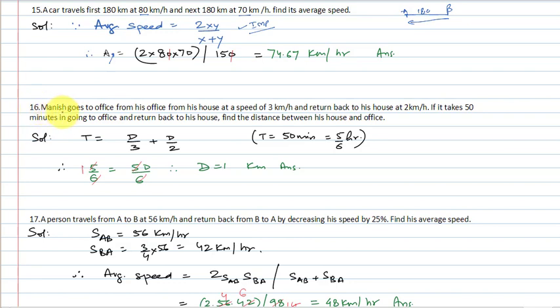Question number 16: Manish goes to his office from his house at a speed of 3 km per hour and returns back to his house at 2 km per hour. If it takes 50 minutes in total going and returning, find the distance between his house and office.